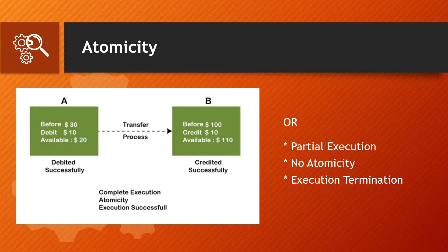Let's look at an example. A and B are two users doing a fund transfer. User A had $30 and User B had $10. Now User A transfers $10. Debit is successful, credit is successful, and both accounts are updated. This is a complete transaction. If the entity is not completed fully, it will be terminated — it can never be partial.